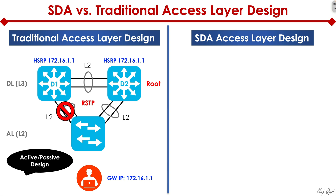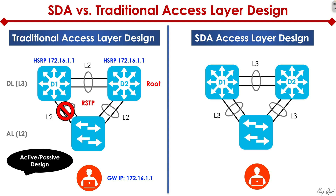To the right of the screen you can see an access layer switch plugged into distribution switches at the top, and these are all Layer 3 links, once again bonded using EtherChannel. The access layer is Layer 3, the distribution layer is Layer 3 — we have Layer 3 everywhere with no spanning tree. Because we have Layer 3 everywhere, we can run a routing protocol like IS-IS, which Cisco uses in SDA to build the underlay of the network.